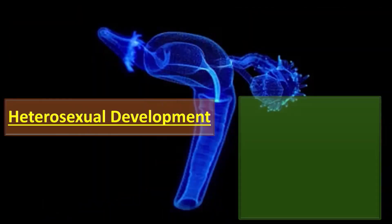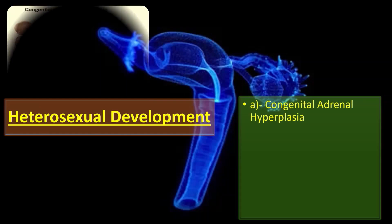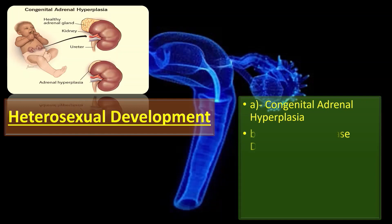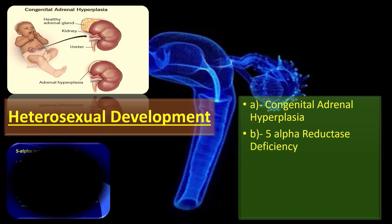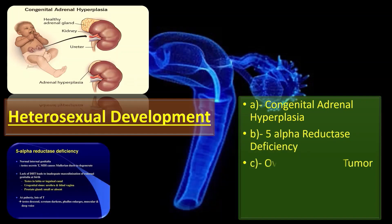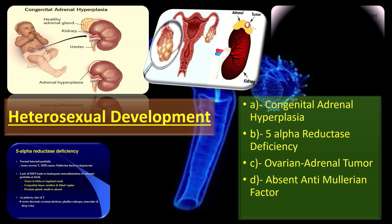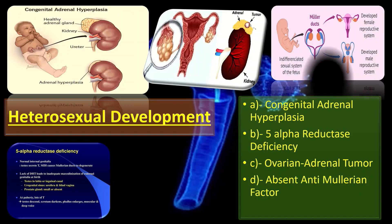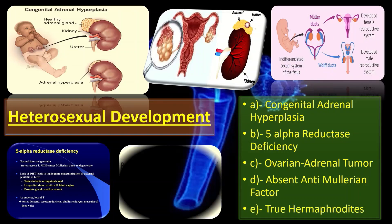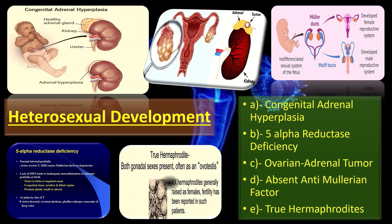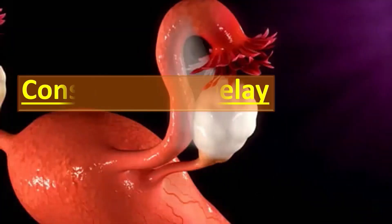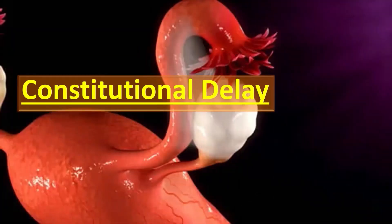Coming to the third main division, heterosexual development, that includes congenital adrenal hyperplasia, 5-alpha reductase deficiency, ovarian adrenal tumor, absent anti-Müllerian factor, and true hermaphrodites. The last group of primary amenorrhea is that of constitutional delay.